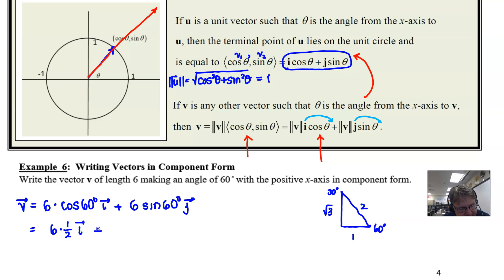And then the sine of 60 degrees, a little bit more complicated. That's the square root of 3 divided by 2 multiplied by vector j. And by the time all the dust settles and we do our simplification, we end up with 3i plus 3 times the square root of 3 times j. And that's going to be our vector in linear combination form.